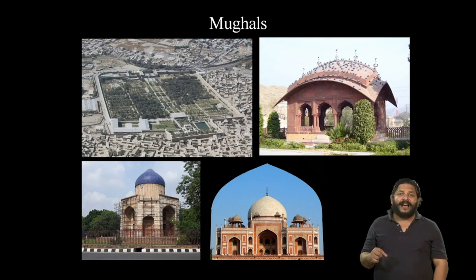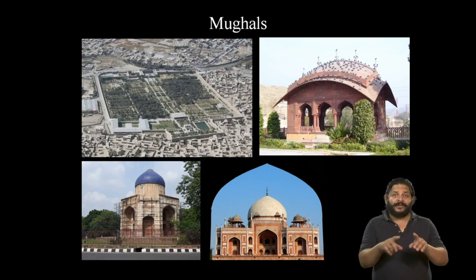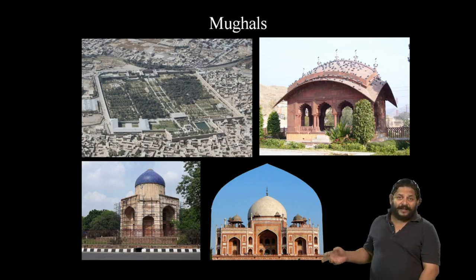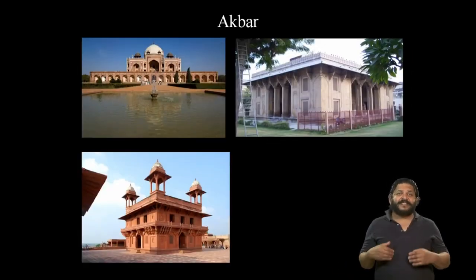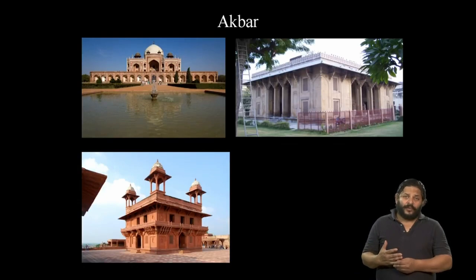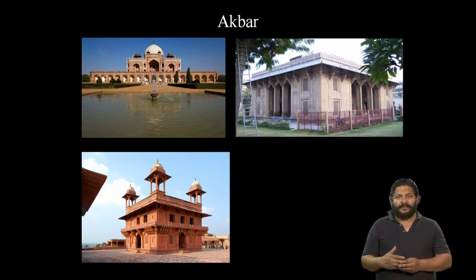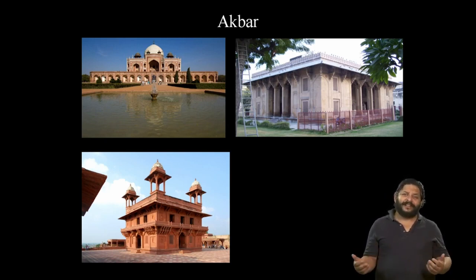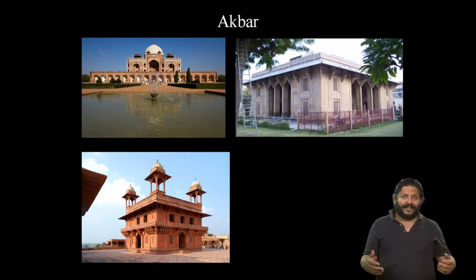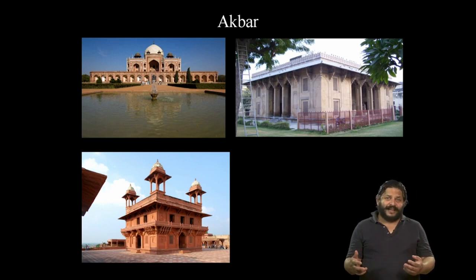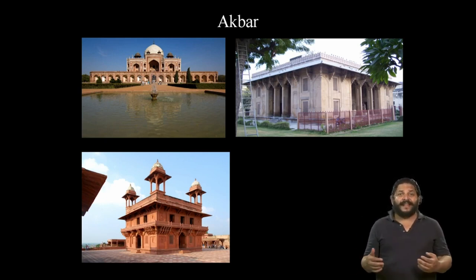Mughal buildings after Jahangir are incomplete without having this kind of roof. These chhatris, the baluster columns and the multifoil arches are all elements that we see slowly being introduced. Akbar is a very innovative ruler who tries innovation not just in architecture but also in music, religion and other arts. As he conquered parts of central India, western India, Rajasthan, Gujarat and Madhya Pradesh, he brought back elements of architecture from all these regions, creating a new imperial style in his heartland of Delhi and Agra.